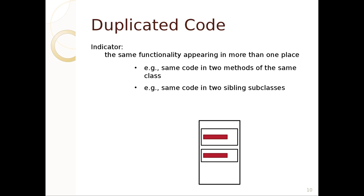Here's one example of a code smell: duplicated code. This occurs when you have the same functionality appearing in more than one place — the same code in two methods of the same class, or the same code in two sibling subclasses. Duplicated code is dangerous because if you found a bug in one, you'd have to remember to fix it in the other too. It adds more lines of code, more potential for bugs, and means that if you do fix something you might not fix all of it. The solution is basically to move it — give it a method name or make a class.